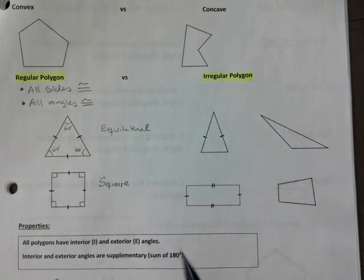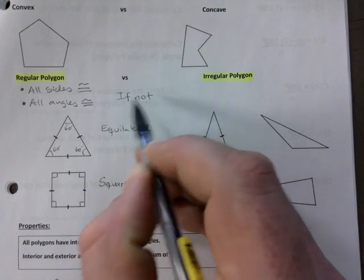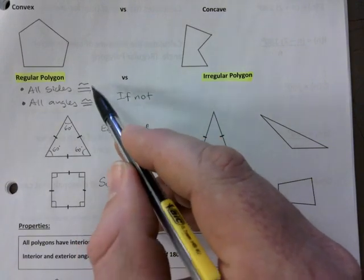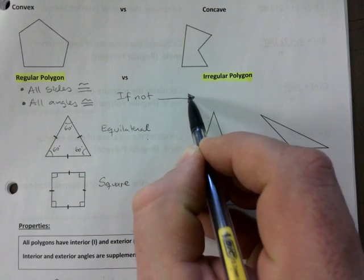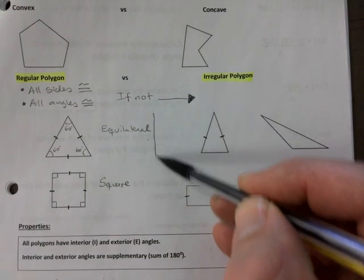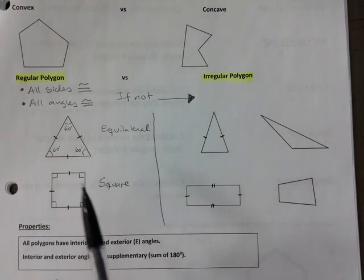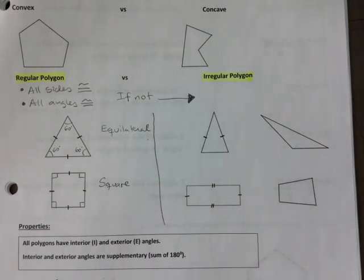Anything that isn't. So I say this, if not, if you can't say yes to both of these statements, you get transferred into the irregular category. So I'll make a line here. Say like the left is regular.